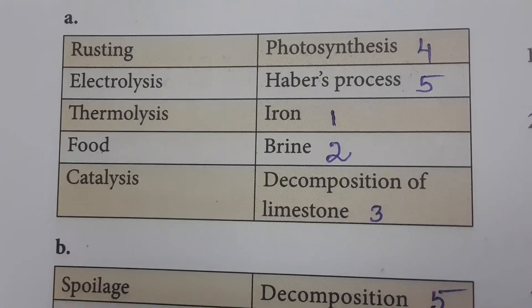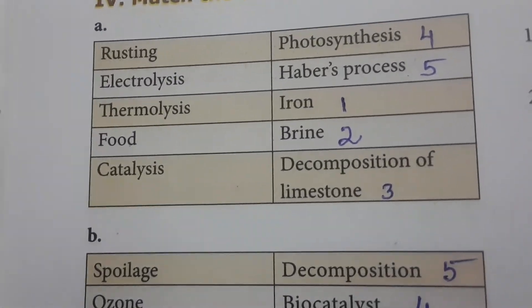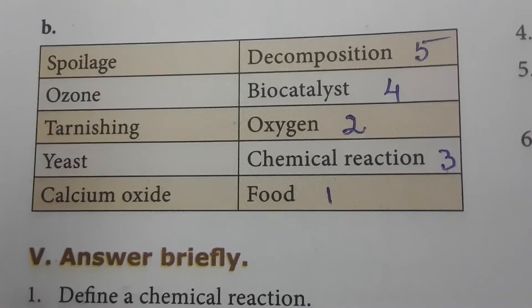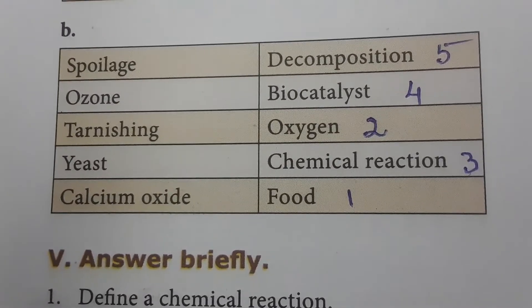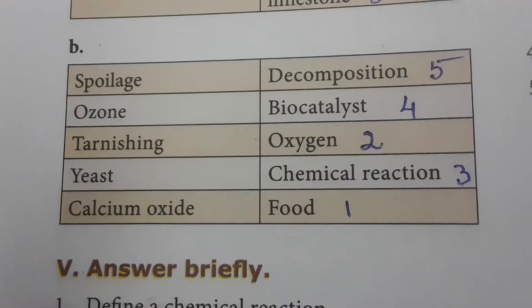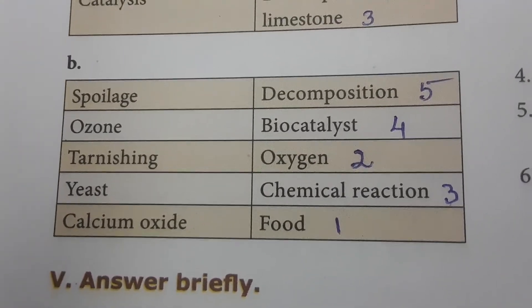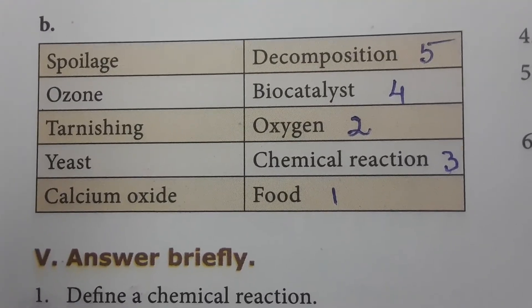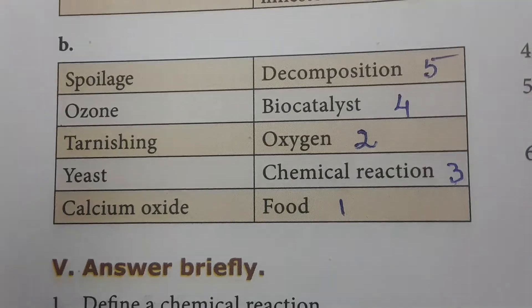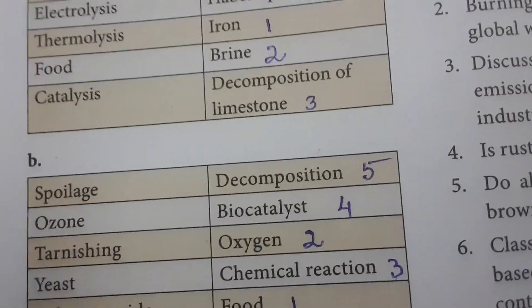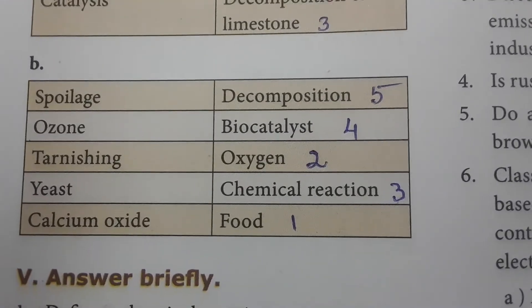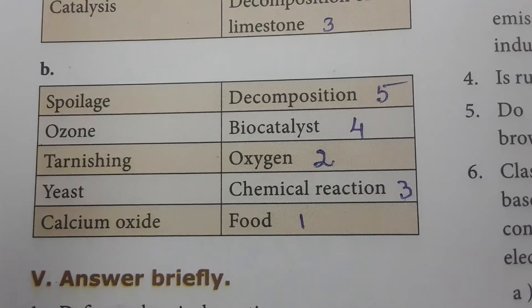Catalysis is matched with Haber's process. Spoilage means food getting spoiled. Ozone is matched with oxygen — ozone contains three oxygen molecules combined together. Tarnishing is matched with chemical reaction. Yeast is a bio-catalyst — when you add yeast to rice dough, the dough gets fermented, which is why we add yeast. That's all about this book back evaluation.